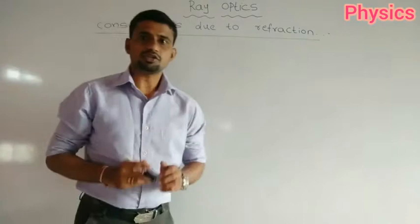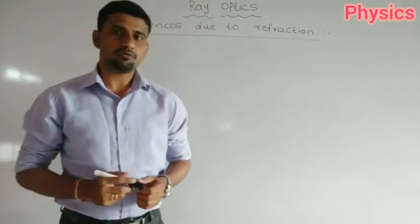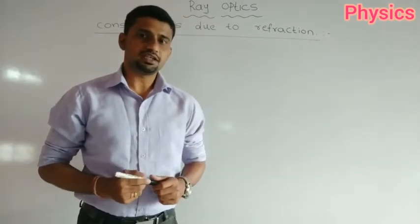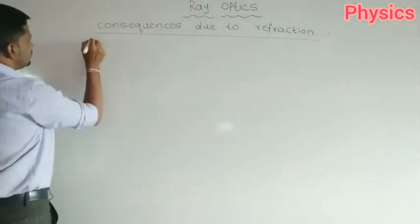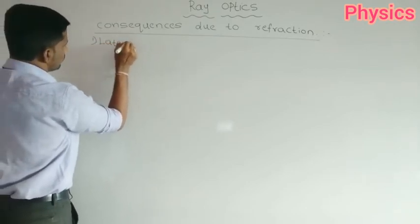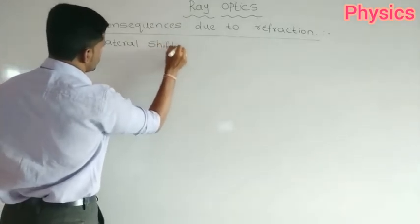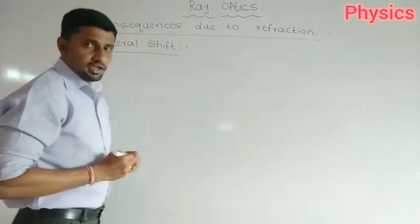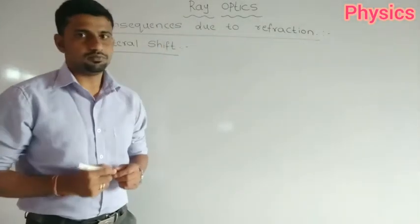There are different consequences we observe due to the refraction of light. Now we will discuss some of them. The first one is the lateral shift. This is one of the consequences which is due to the refraction of light. So what is lateral shift?